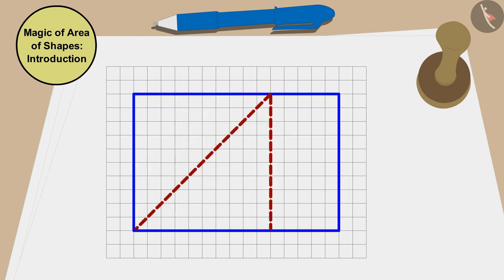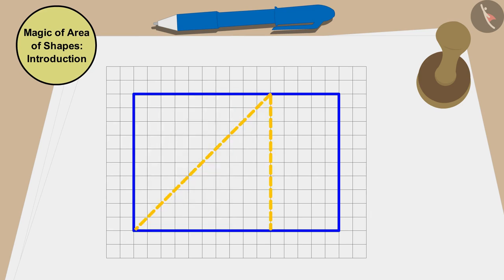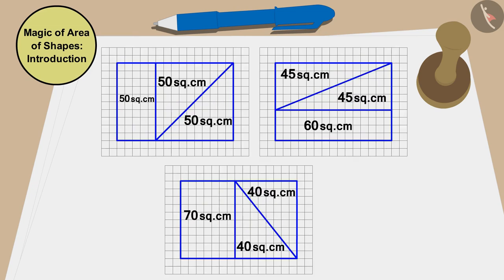Therefore, the area of these two triangles is exactly the same as half or 50 square centimeters of this square. Well, we can make these two lines in more ways.